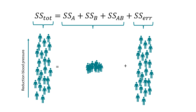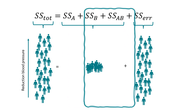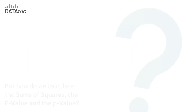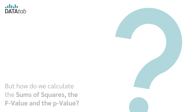In this other case, it would be the other way round: drug type, gender, and the interaction almost have no effect on the reduction in blood pressure, and it all adds up in the error. But how do we calculate the sum of squares, the F value, and the p-value?